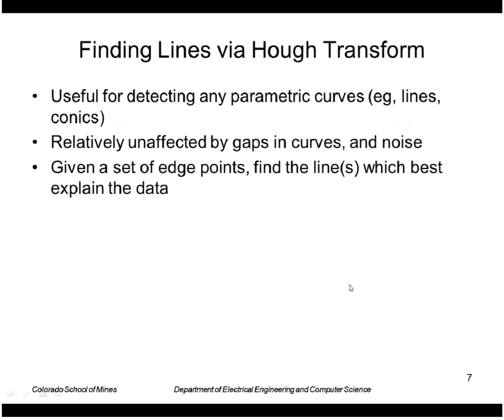We're going to look at another method for line finding, and that's called the Hough Transform. It's actually useful for detecting any parameterized curves such as conics, but for now I'll just look at line finding. This has the advantage of being relatively unaffected by gaps and curves and noise.